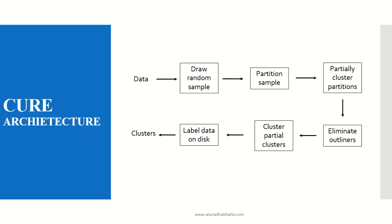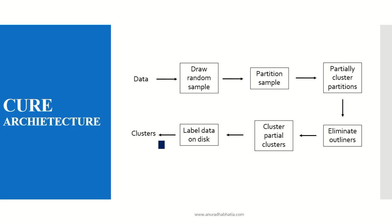This is the CURE architecture. The data comes in and a raw random sample is created. From the random sample, we partition those samples, also done randomly, and partially clustered partitions are formed. When we cluster them together after partitioning, we eliminate the outliers. After eliminating the outliers, we again create a partial cluster. After partial clusters are created, we write the label data onto the disk and finally the clusters are formed.